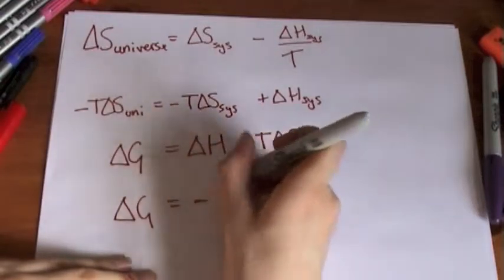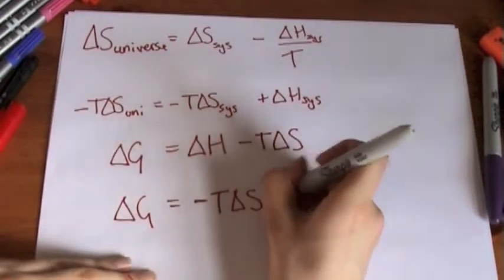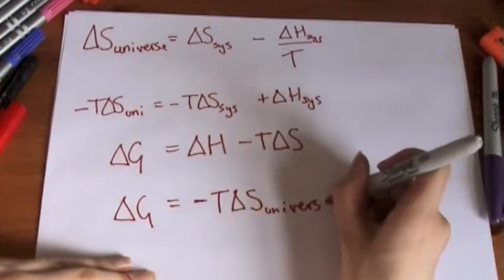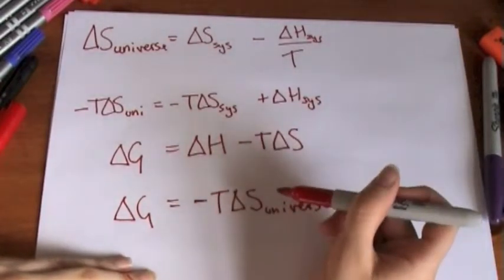So we said for a reaction to be spontaneous, for something to be able to occur by the laws of, like the second law of thermodynamics, the entropy of the universe must be positive, it must increase.